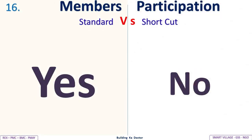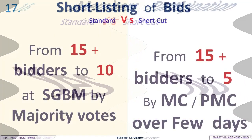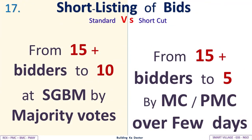Discussion at SGBM: Standard method includes merit review of bids on five basic points; shortcut has nil discussion. Members' participation: Standard — yes; shortcut — no. Shortlisting of bids: Standard shortlists from 15-plus bidders to 10 at the SGBM by majority votes; shortcut reduces from 15-plus to just five, done by the MC or PMC over a few days.